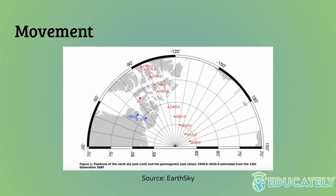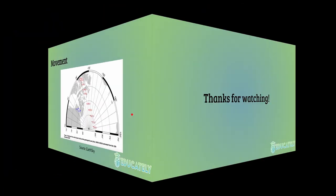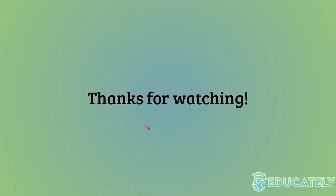The geomagnetic pole, like the magnetic poles, moves over time, though geographic poles barely move. In red, you can see the movement of the north magnetic pole — it has moved from northern Canada all the way to near the geographic north pole over the last 120 years. In blue, the geomagnetic north pole has moved more slowly but still considerably, from Greenland to northern Canada over the same period, based on how Earth's magnetic field has changed over time.